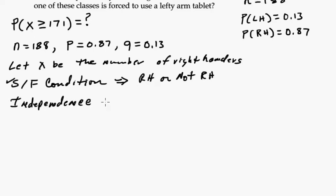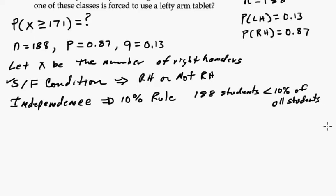From what knowledge I have, knowing that one person is left-handed, I don't think that affects the probability of the next, but just to be safe, because the population is kind of fixed and the population is kind of small, can we apply the 10% rule? There's 188 students. That's less than 10% of all students or of all people. So I think that's going to work, that we can at least use the 10% rule.